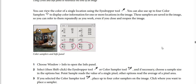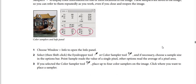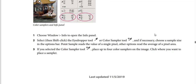For Color Samplers and the Info panel: Step 1 — choose Window, then choose Info to open the Info panel. After that, select then shift-click the eyedropper tool or color sampler tool, and if necessary choose a sample size in the options bar. Point sample reads the values of a single pixel; other options read the average of a pixel area. Step 3 — if you selected the color sampler tool, place up to four color samplers on the image, then click where you want to place a sampler.